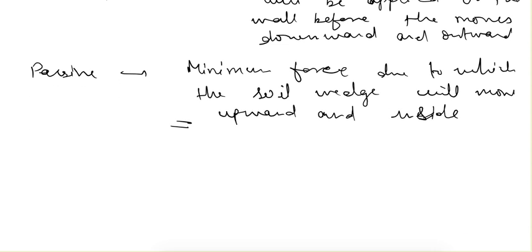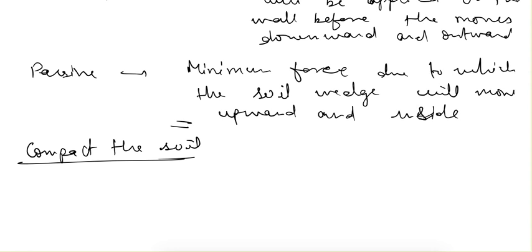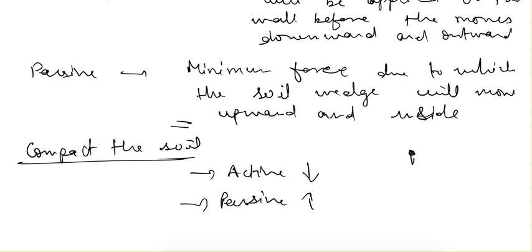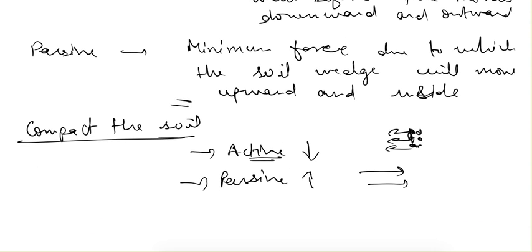If we compact the soil, what will be the effect on active and passive earth pressure? If we compact the soil, active earth pressure decreases whereas passive earth pressure increases. Because the soil grains come closer and there is less tendency to move away, the pressure applied on the wall decreases. But since the soil is now compacted, pushing it inward requires more force, so passive earth pressure increases.